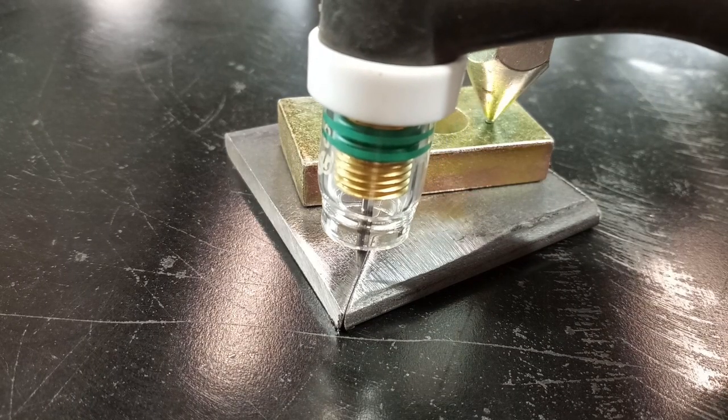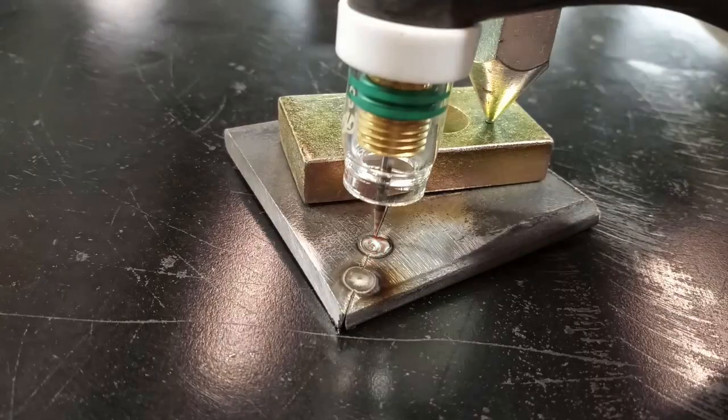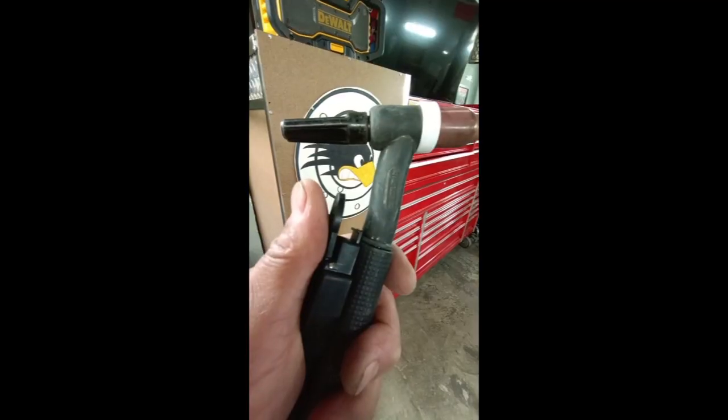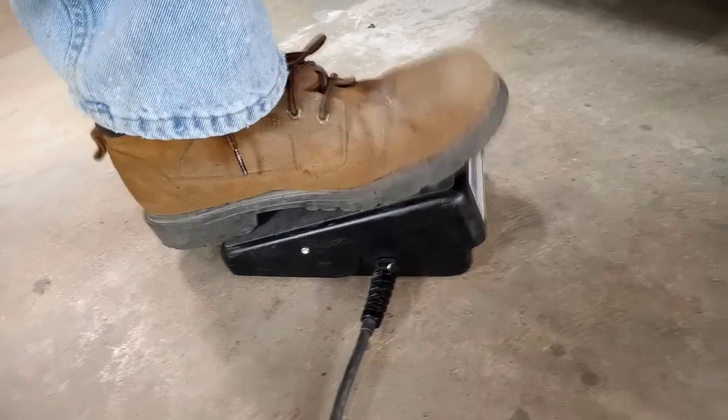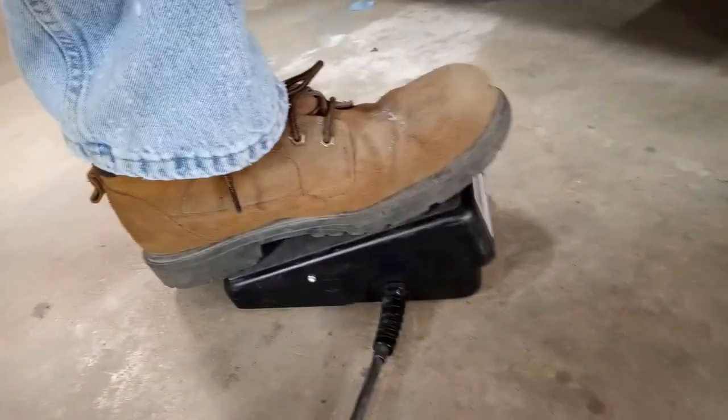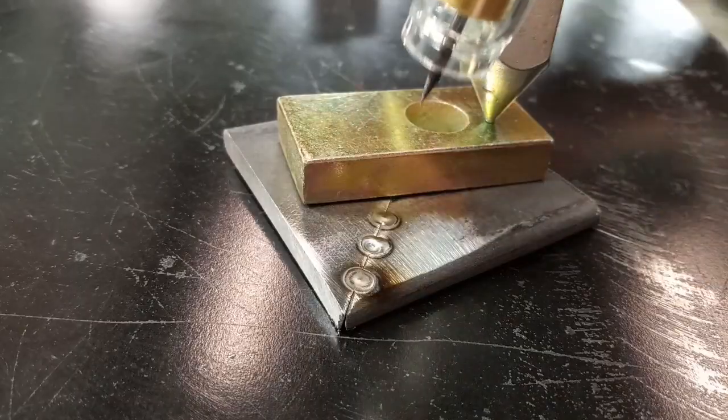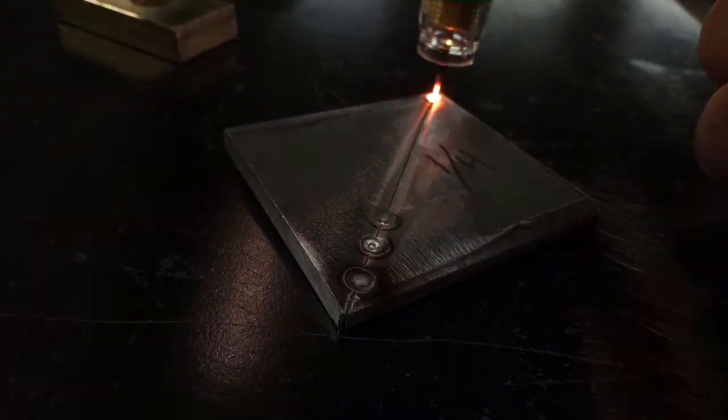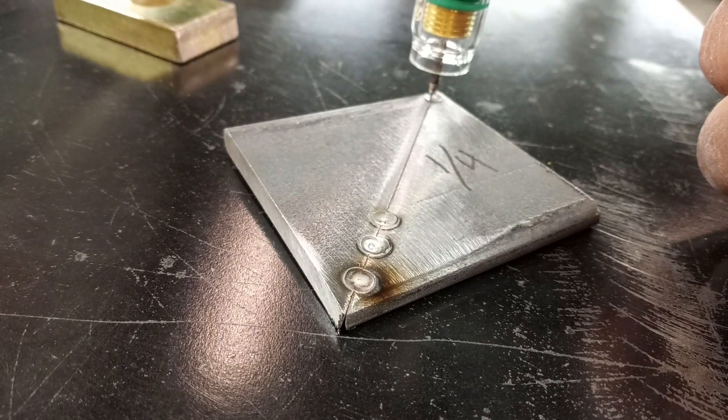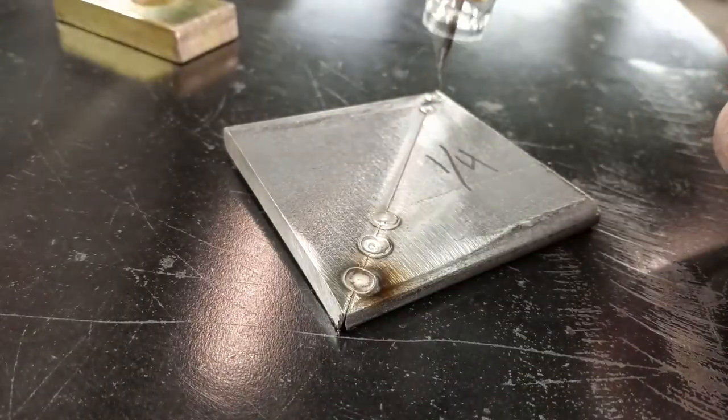Once you get it dialed in, it works well. First key: whether using a finger switch or a foot pedal, the trick is on-off as quickly as possible. We don't ramp up or ramp down, it's just hit it on-off. That's the first key. You can kind of see how fast we're going, initiating the arc and letting off. And that's the result.